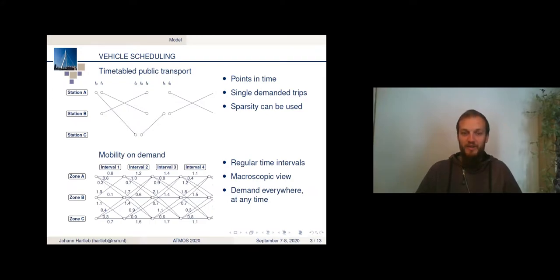However, when you look at mobility on demand, there is basically demand everywhere at any time. We don't have really stations, but we consider zones where people are or where they live. And the time we don't have discrete points in time, but we rather consider time intervals. They are picked up or dropped off within a certain time interval. So we have this macroscopic point of view here where we have non-integer demand. And we have a very, very complete time-space network that we need to consider. So this different structure basically asks for a different treatment.